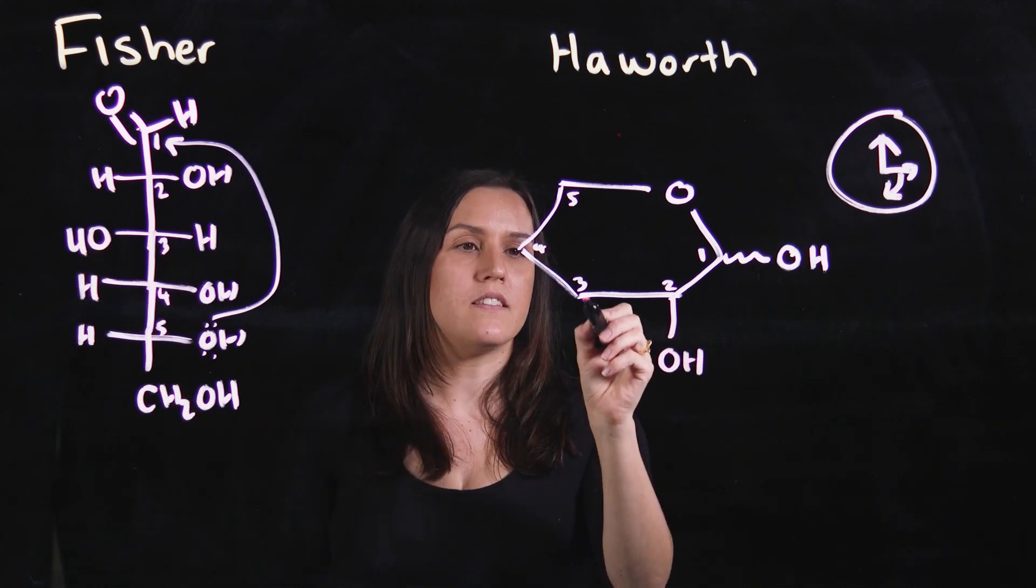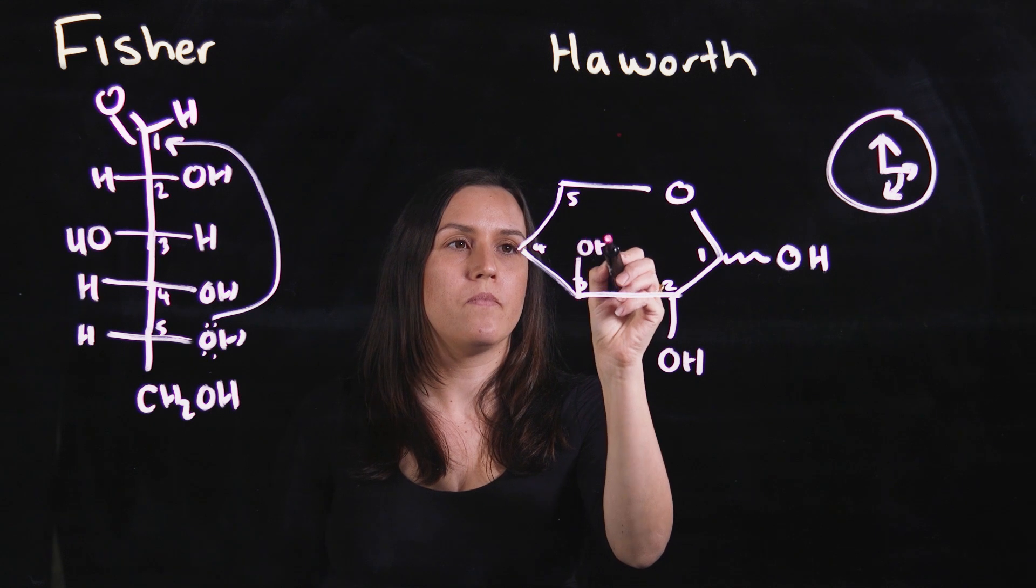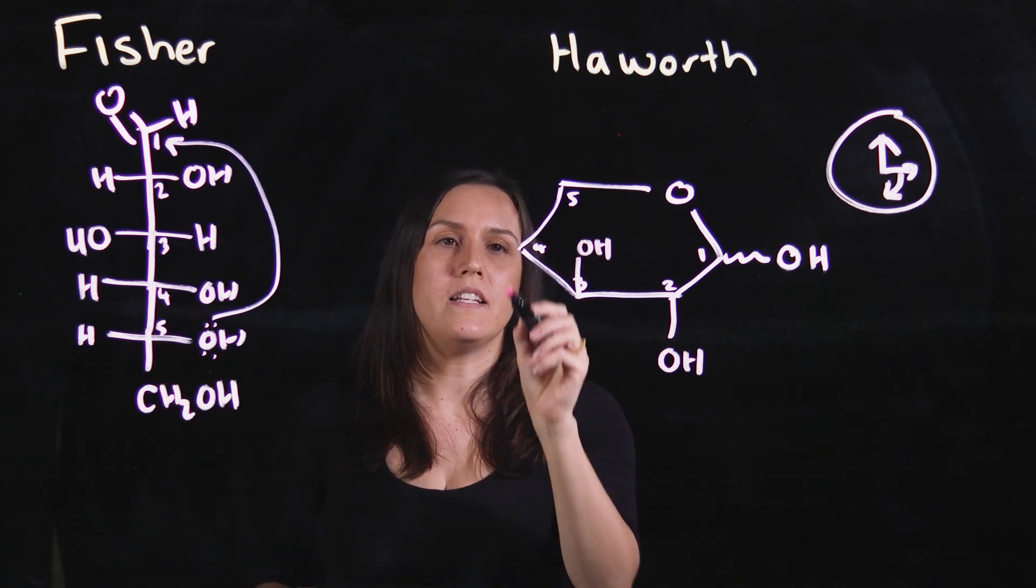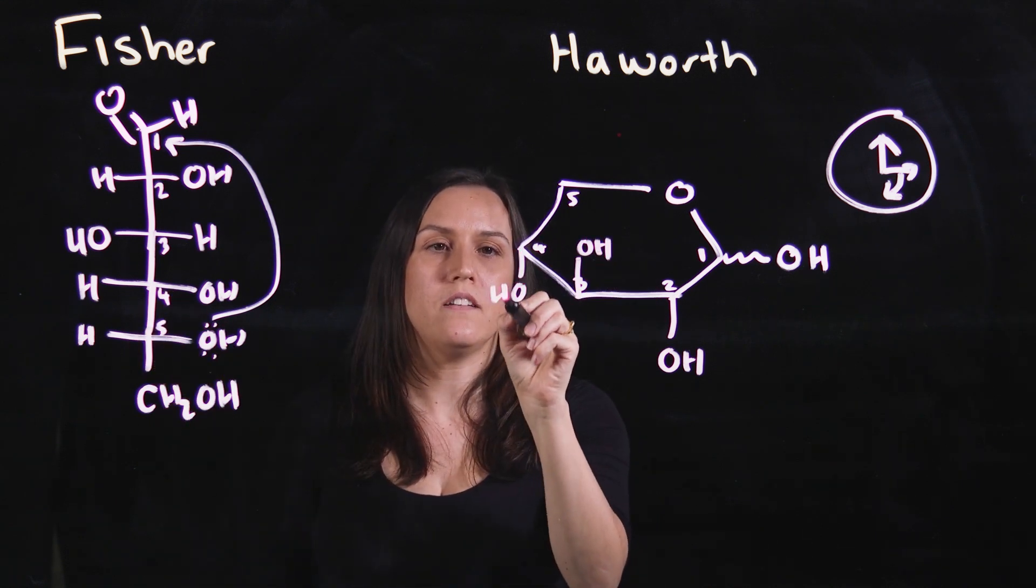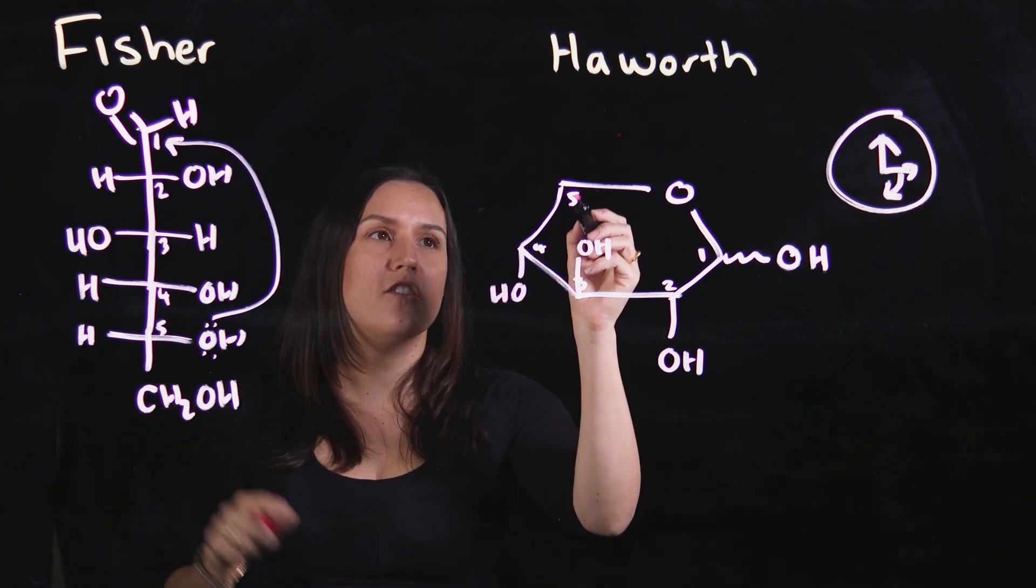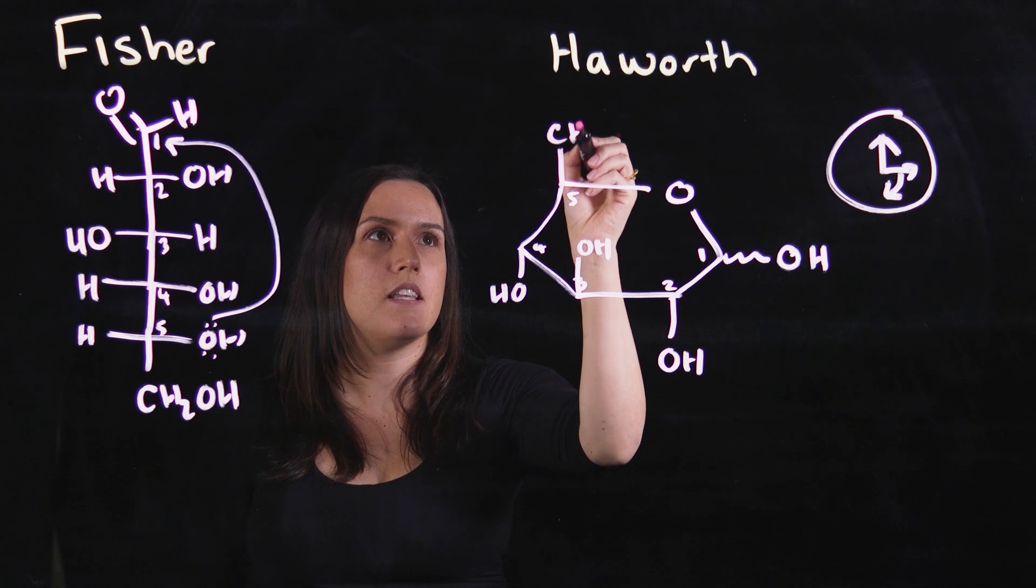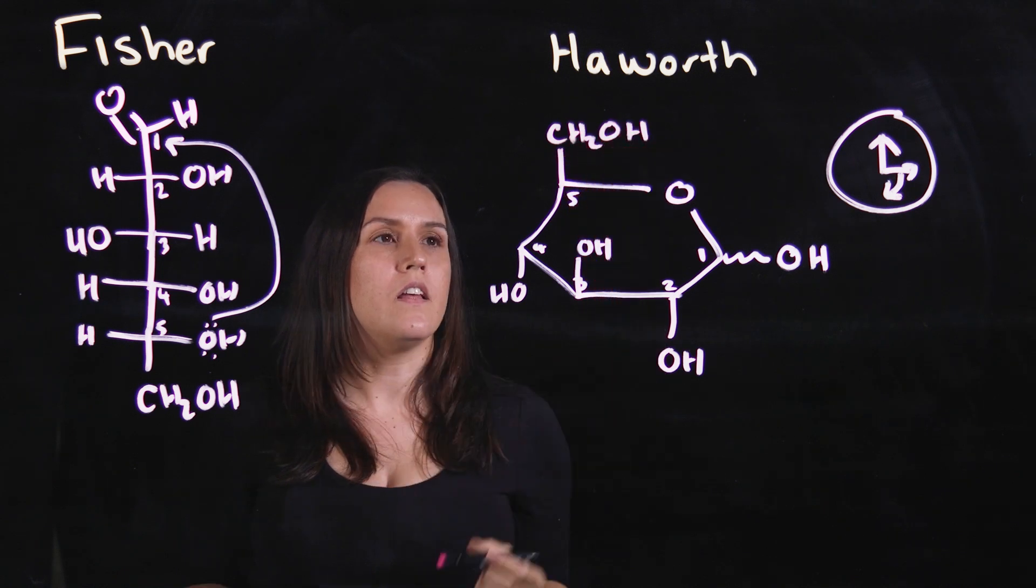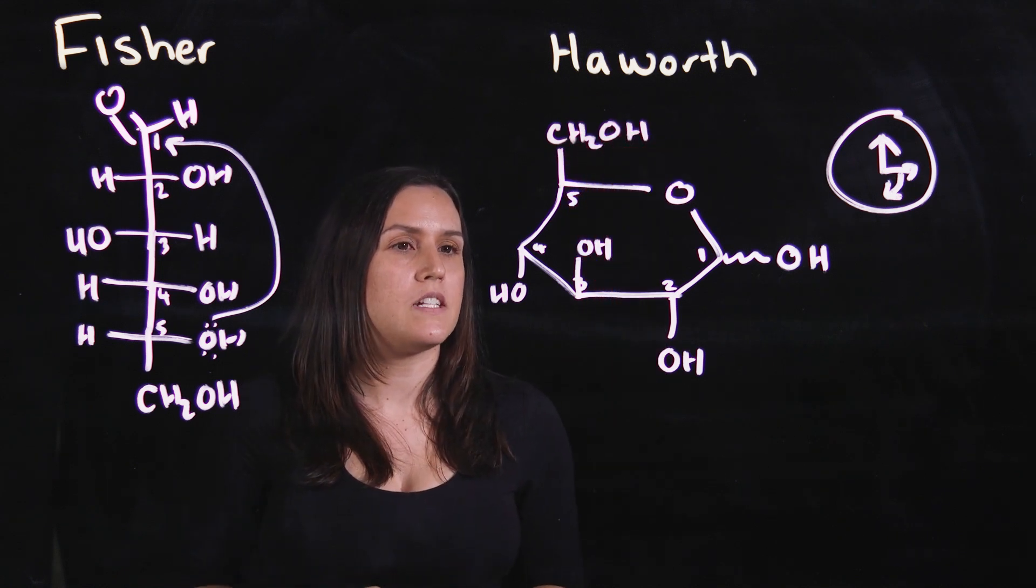Carbon 3 is on the left-hand side, so it will be going up. Carbon 4, right-hand side, will be going down. And carbon 5 has the CH2OH, and that is always in the upwards position in this representation.